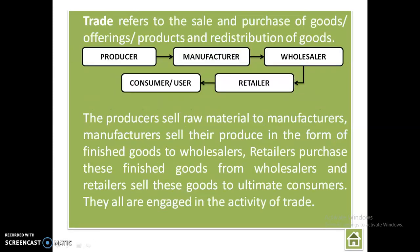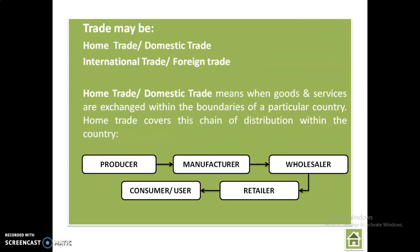Trade refers to sale and purchase of goods, offerings, products and redistribution of goods. The producer sells raw material to manufacturers. Manufacturers sell their products in the form of finished goods to wholesalers. Retailers purchase these finished goods from wholesalers and sell these goods to ultimate consumers. They all are engaged in the activity of trade.